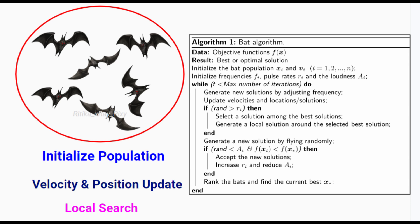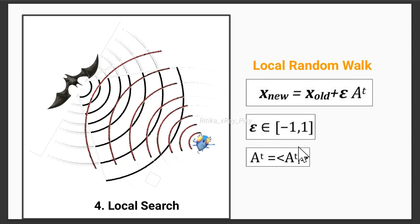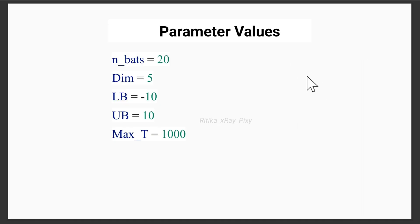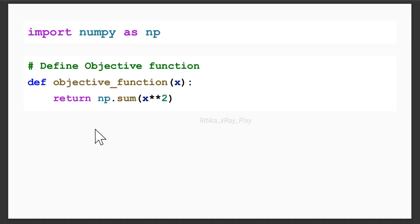Now we will implement this algorithm step by step. You can use any objective function; for simplicity, we are using the sphere function as the objective function, which is a common test function used for optimization algorithms. After that, we will initialize the parameters: number of bats is the population size — suppose we have 20 — dimension is 5, lower bound is minus 10, upper bound is 10, and maximum number of iterations is 1000. We import numpy as np.